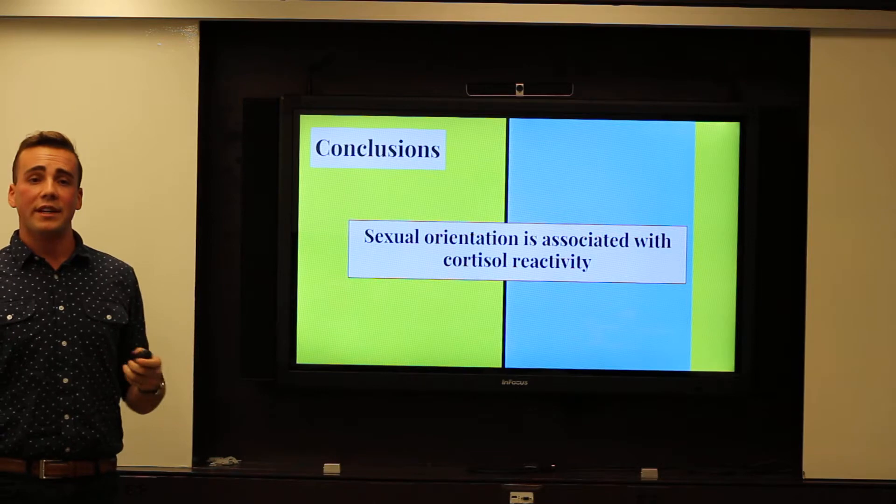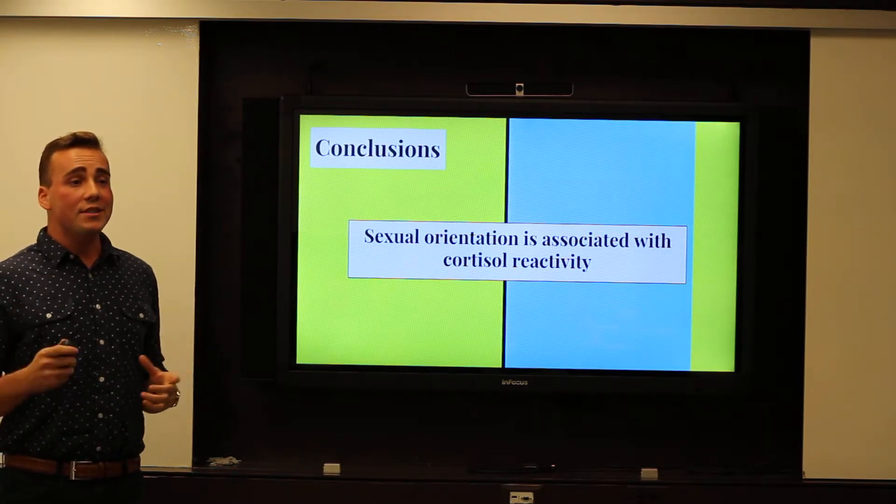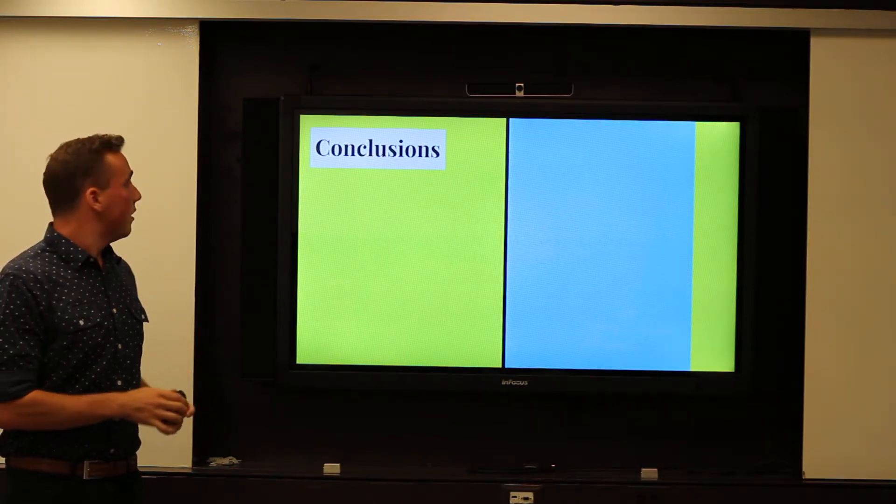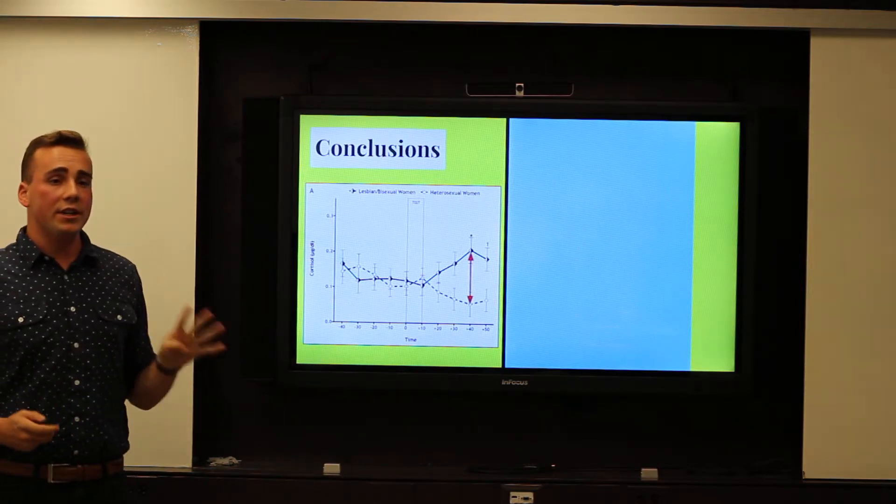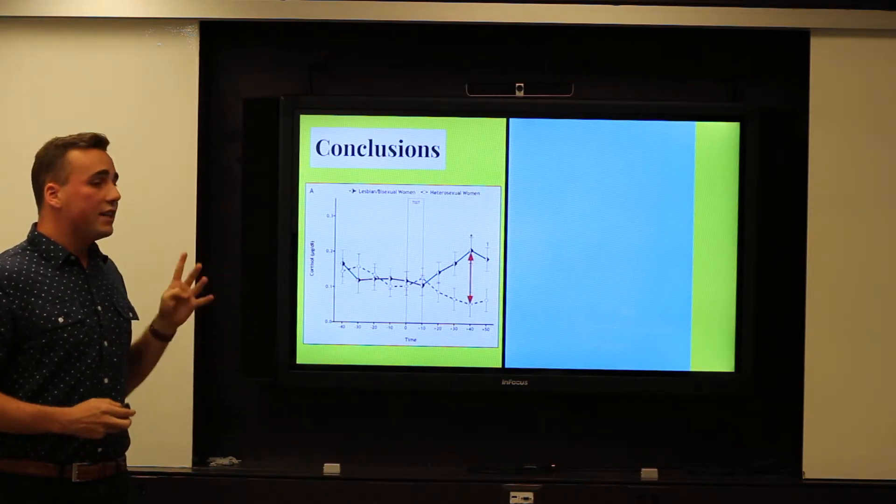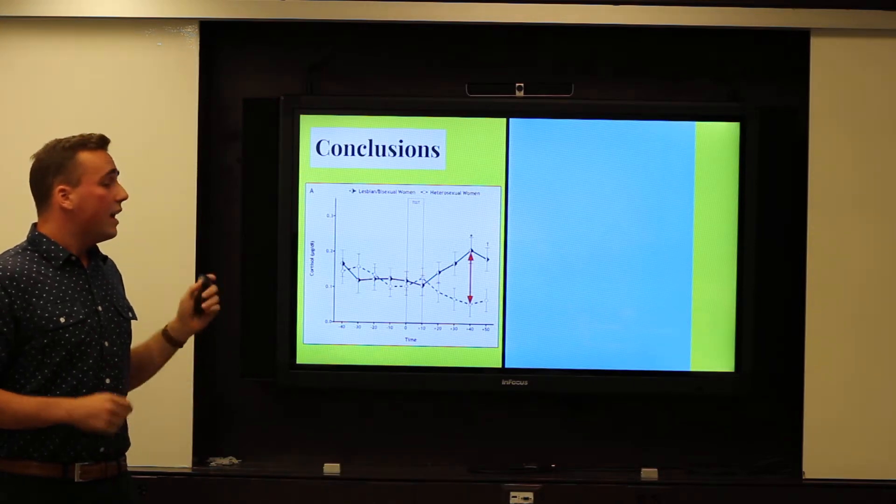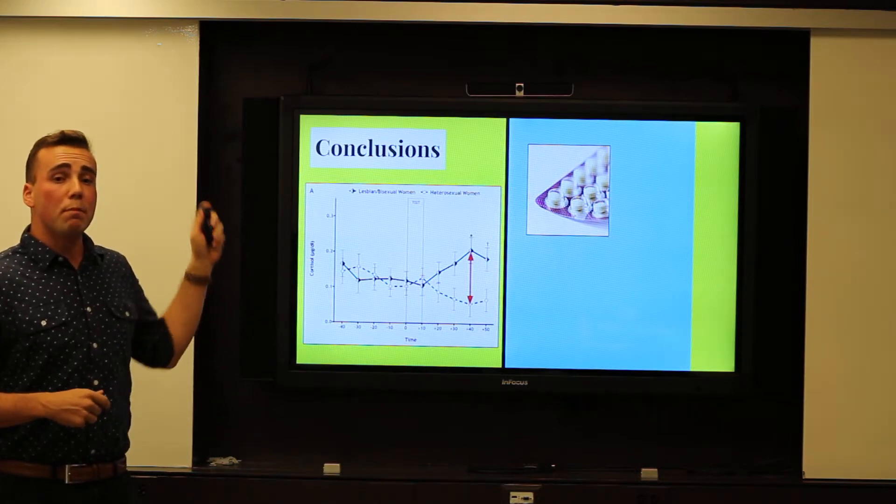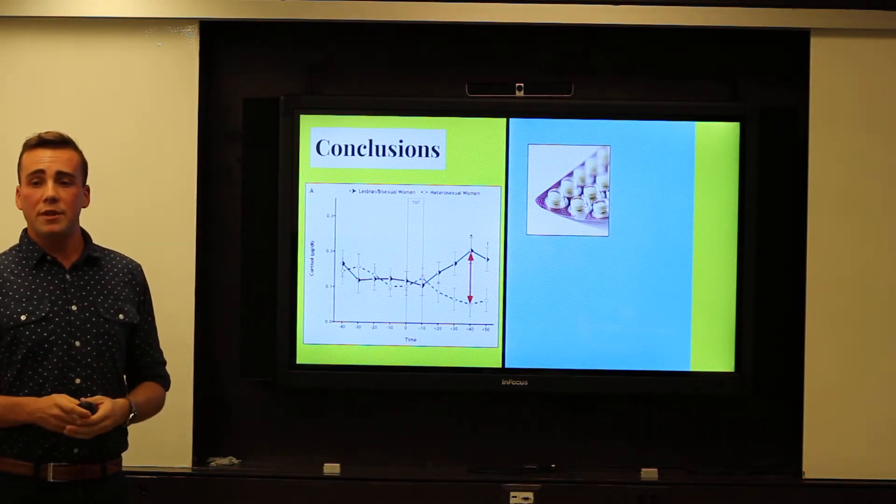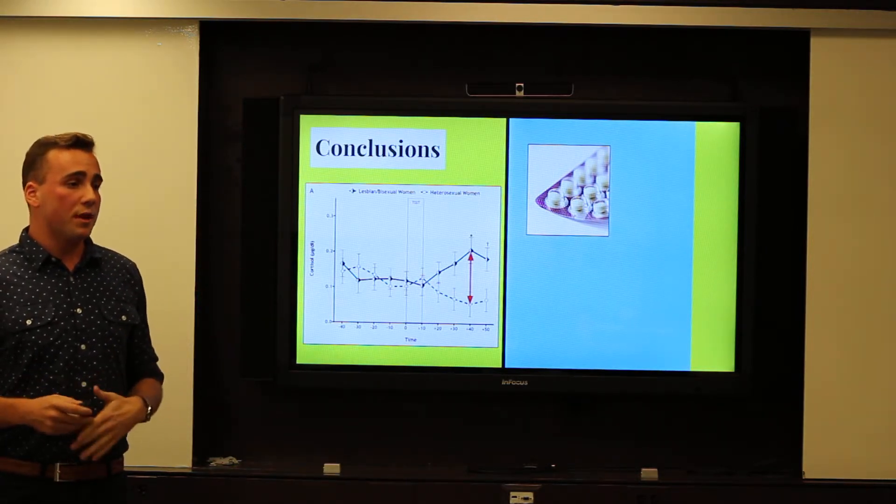So the researchers concluded that sexual orientation is associated with stress response. But they wanted to look at what this difference was. There was a four-fold increase in cortisol levels in queer women as there were heterosexual women. And they have some guesses as to why this may be. The first of which is birth control.